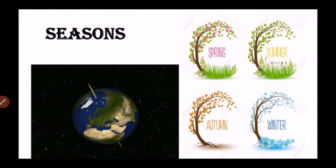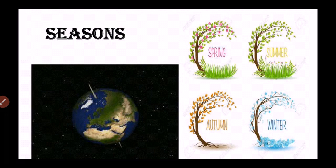Now we will study about the seasons. Generally you know about three main seasons: summer, winter, and monsoon. But here we are going to look at how seasons occur — the movement of the Earth around the Sun brings about changes in seasons. Due to the Earth's movement around the Sun, seasons change, and our Earth has four main seasons: spring, summer, autumn, and winter.